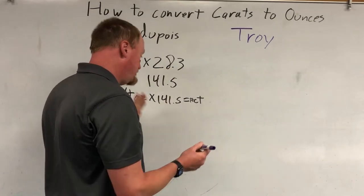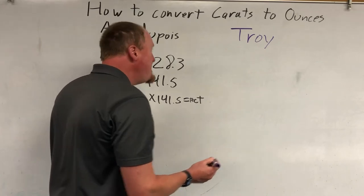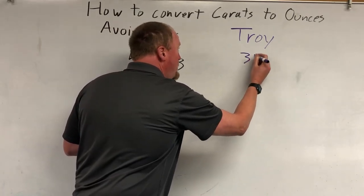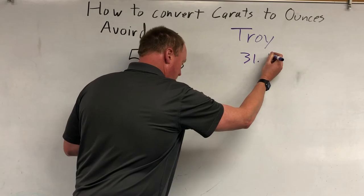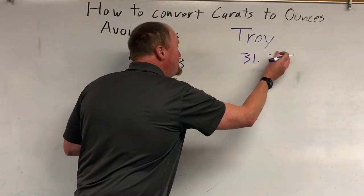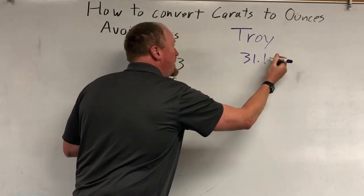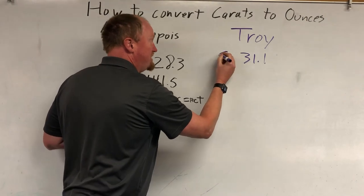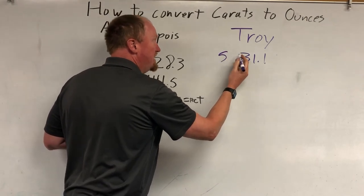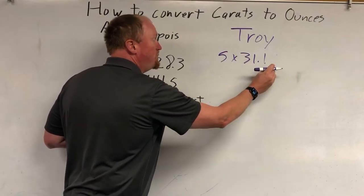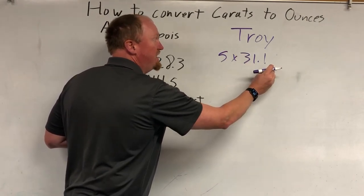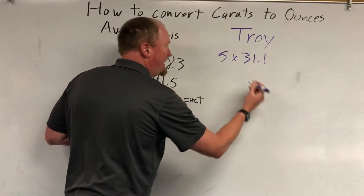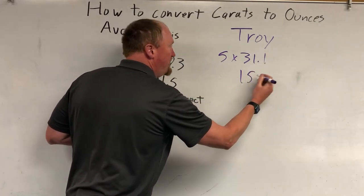A troy ounce is a little bit bigger — it is 31.1 grams. So, five carats in a gram, 31.1 grams in a troy ounce, and that gives you 155.